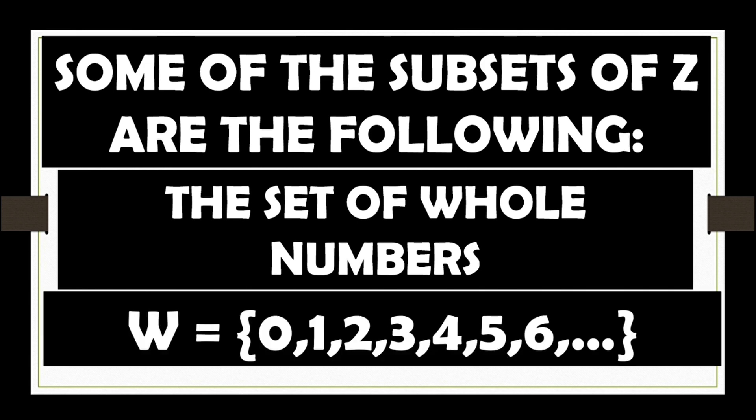The set of whole numbers. Set W consists of 0, 1, 2, 3, 4, 5, 6 ellipses.